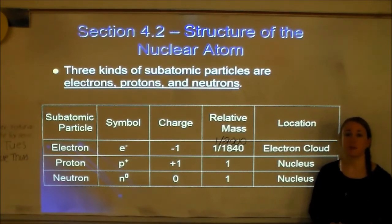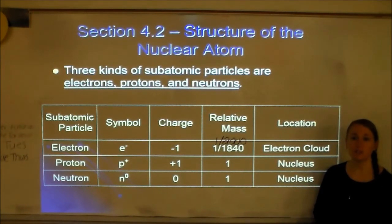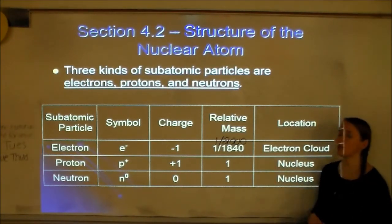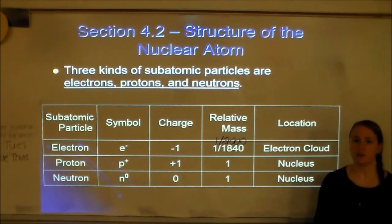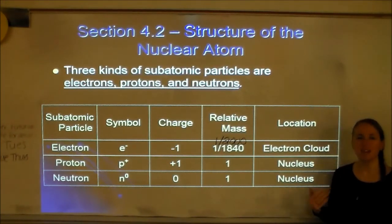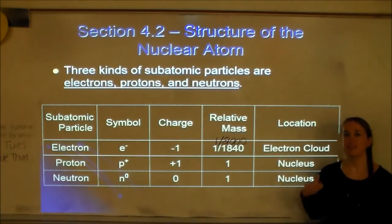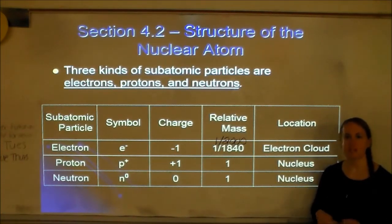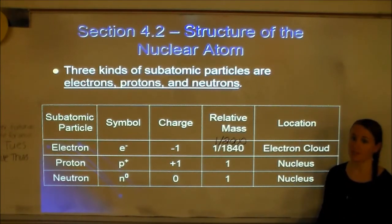Later in section 4.3, when we learn about the mass of an atom, you'll notice that we only care about the proton and neutron — we completely disregard the electron because they're so small. It's like weighing yourself on a bathroom scale, and then I hand you a paper clip. The scale is not going to change because the paper clip is such a tiny difference that the scale won't even recognize it. That's what happens with electrons — even when you have a lot of them, they just don't really affect the mass.